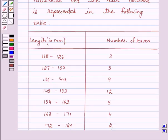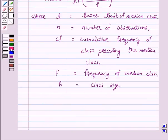The data needs to be converted to continuous classes for finding the median since the formula assumes continuous classes. To make it continuous, we will subtract 0.5 from lower limit of each class and we will add 0.5 to the upper limit of each class. So, the classes then change to.